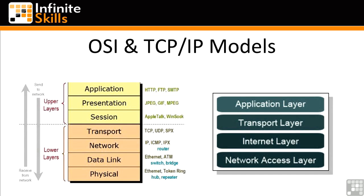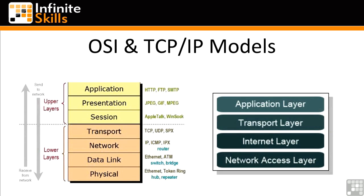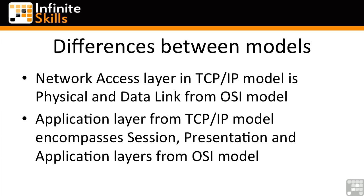We have the network access layer, the internet layer, the transport layer, and the application layer. The functionality that the stack provides is the same — you're not going to get less functionality out of the TCP/IP model. It's just that they've changed where different functionality resides and where the demarcation point between the different layers is. The network access layer in the TCP/IP model consists of the physical and the data link layers from the OSI model. Similarly, the application layer from the TCP/IP model encompasses the session, presentation, and application layers from the OSI model.